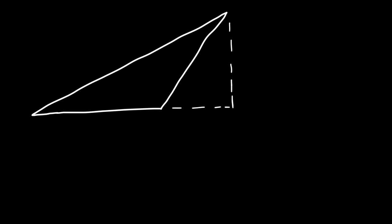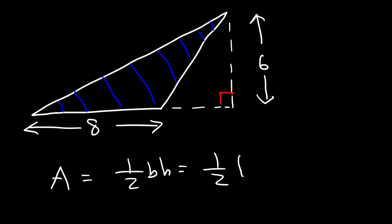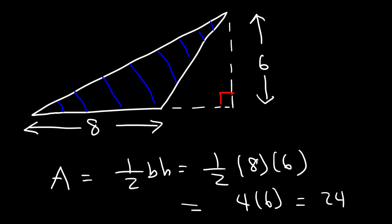Now what about finding the area of a triangle that looks like this? Let's say if you're given a base of 8 and a height of 6. What is the area of the shaded region? You can use the same formula to find the area of that triangle — it's one-half base times height. The base is 8 and the height is 6. Half of 8 is 4, and 4 times 6 is 24. So that's the answer for this example.